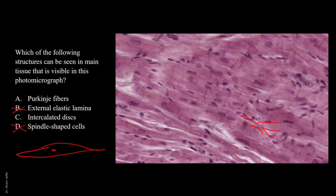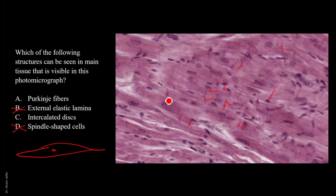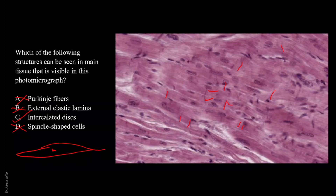Are these Purkinje fibers? Purkinje fibers are modified cardiac muscle fibers. They will look bigger and the cytoplasm is lighter because it doesn't have a lot of organelles — especially in the perinuclear region, you will find it empty. The striking feature that I can see here are the intercalated discs, which is a striking feature of the myocardium. What are the intercalated discs? What do they represent? Rough endoplasmic reticulum, smooth endoplasmic reticulum, synaptic contacts, or junctional complexes?